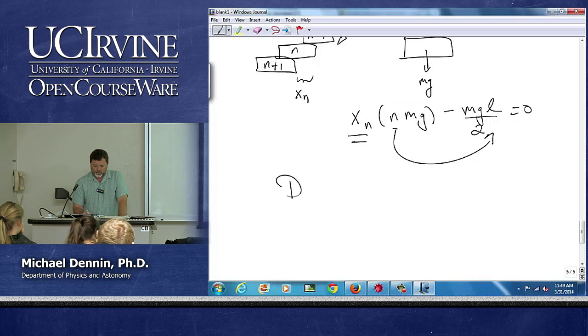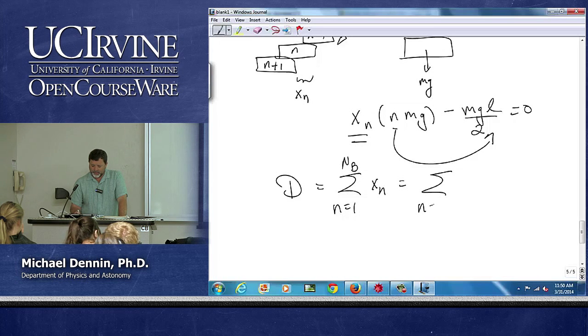So when I look at the total distance out, it'll be the sum over all the blocks of x sub n, and that's a sum over all the blocks of L over 2n.